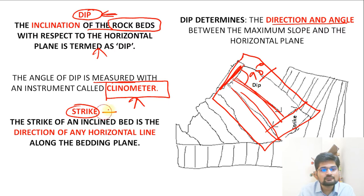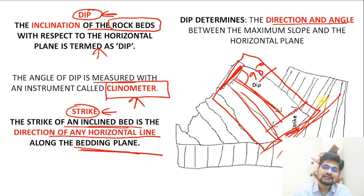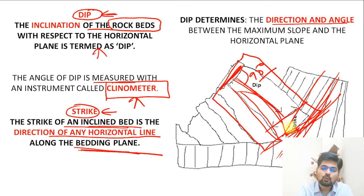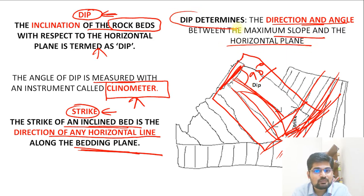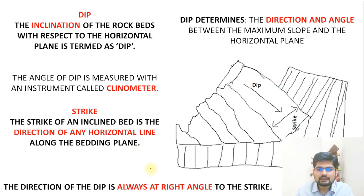Strike is the direction of any horizontal line along the bedding plane of an inclined bed. Dip and strike are almost perpendicular — at 90 degrees to each other. Dip determines the maximum slope direction relative to horizontal, and importantly, the direction of dip is always at right angles to the strike. Geologists measure dip and strike using the clinometer.